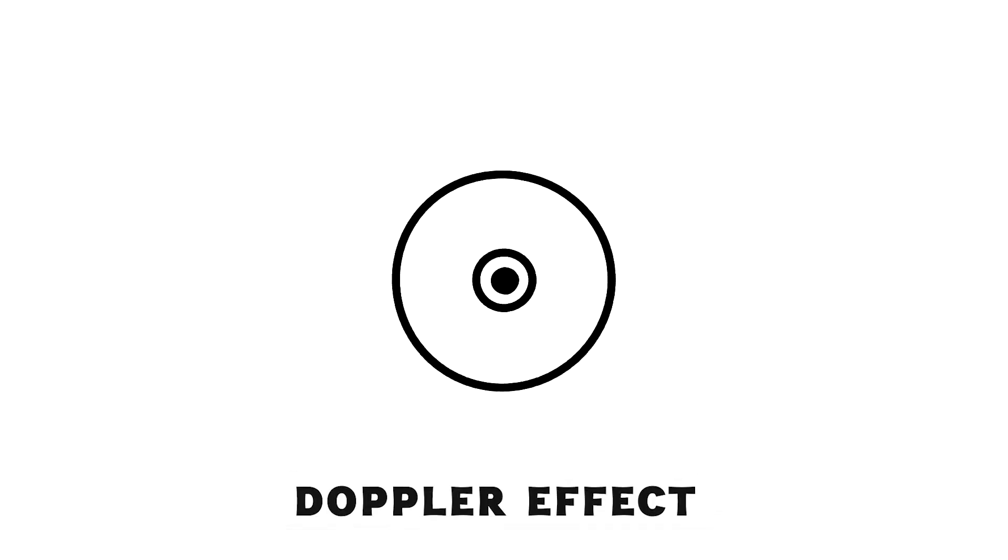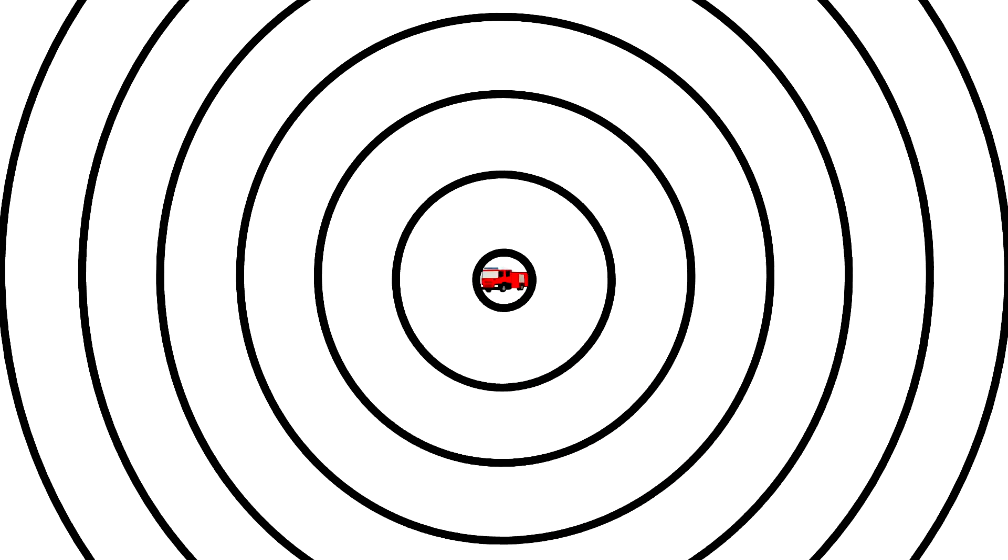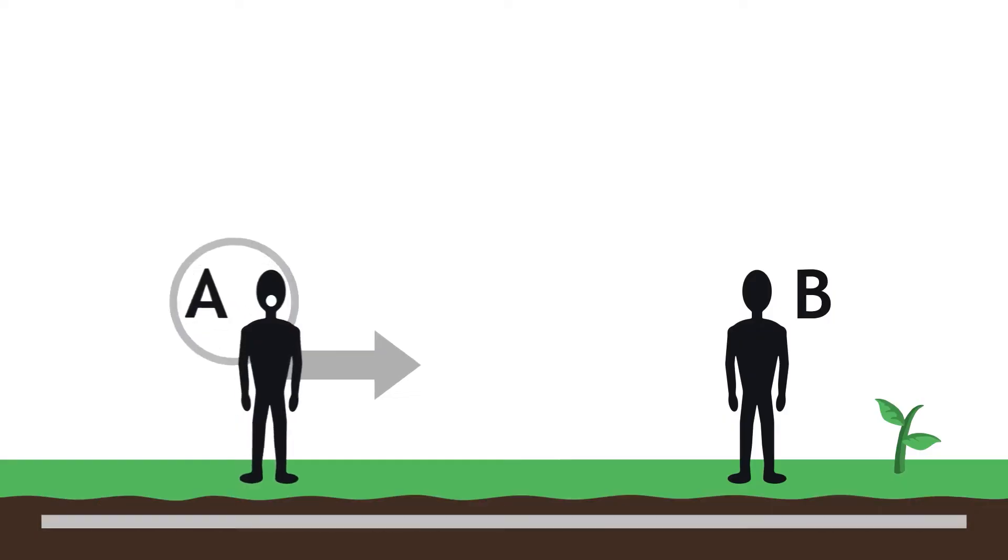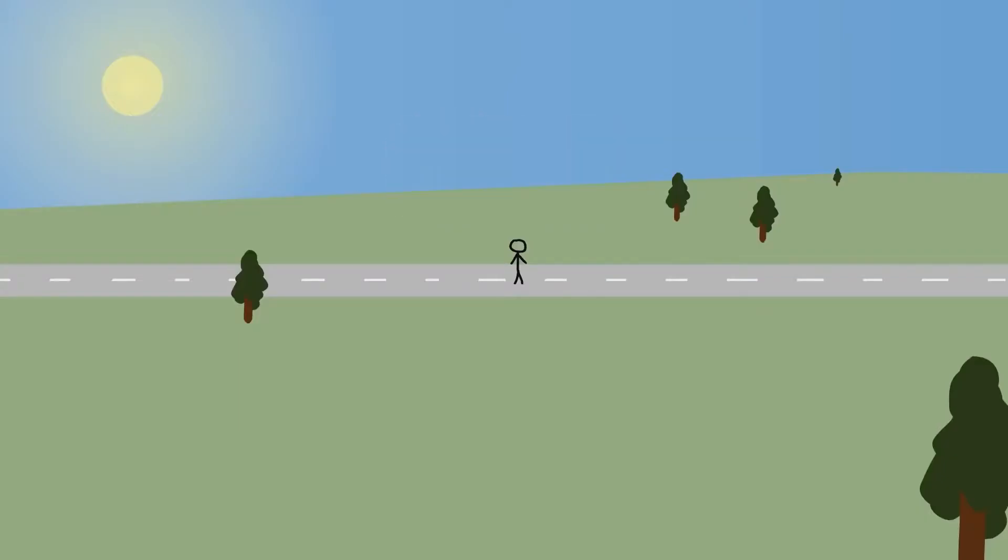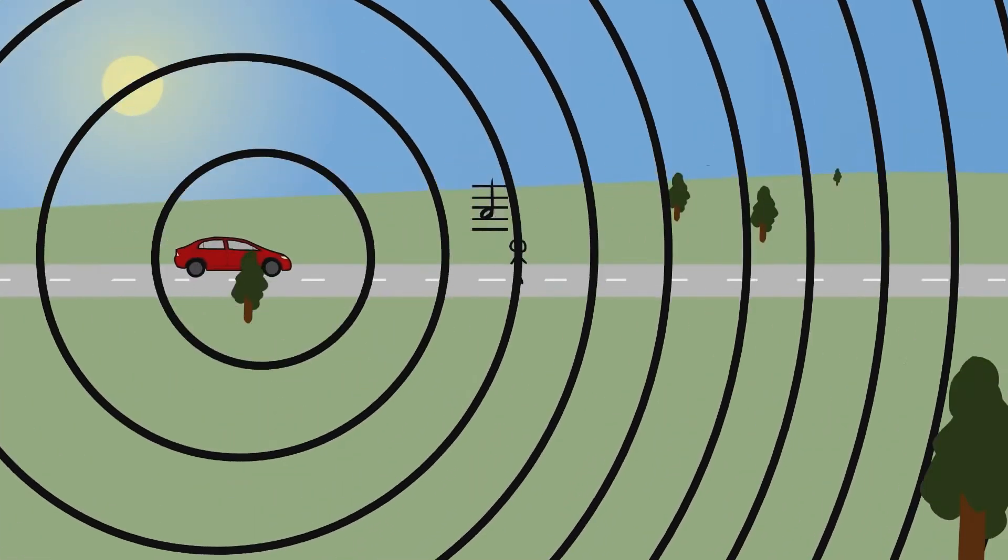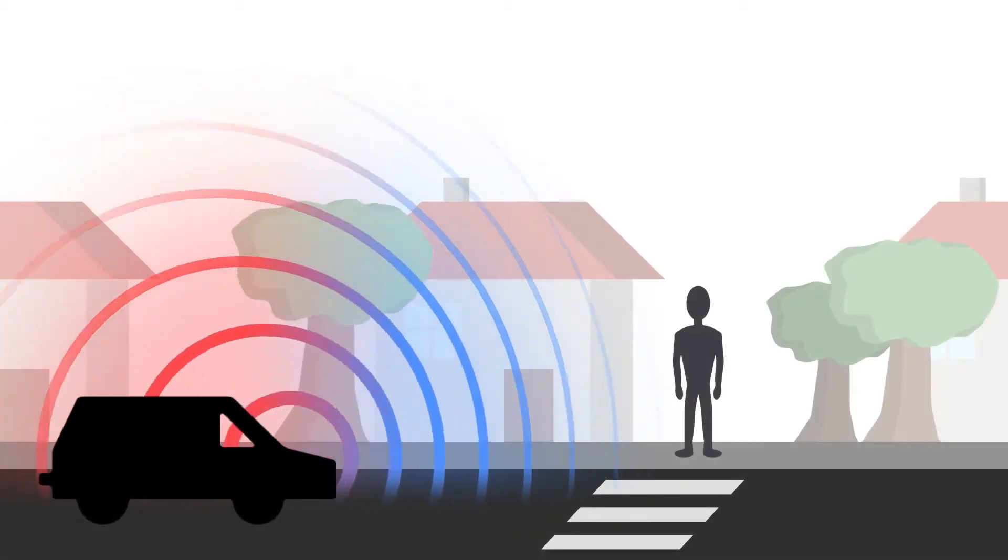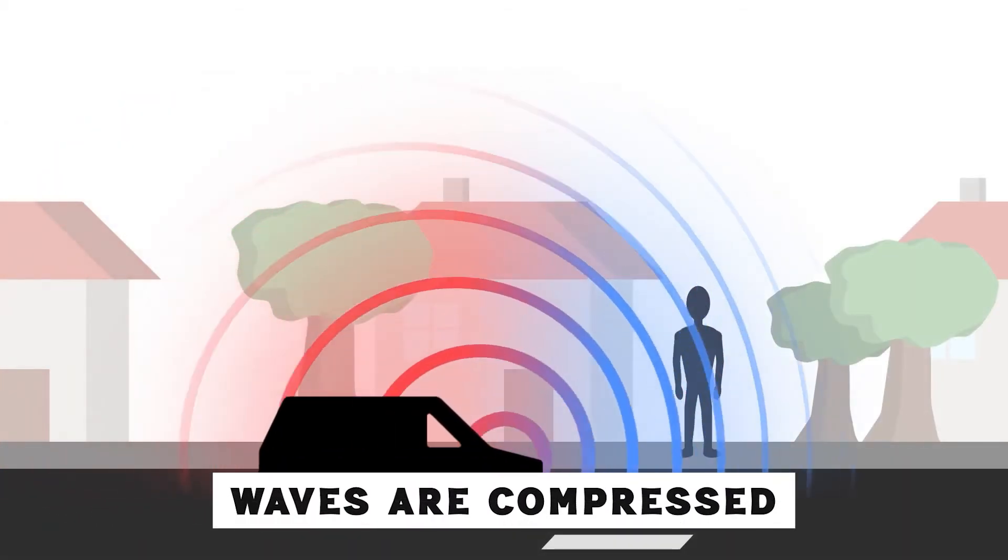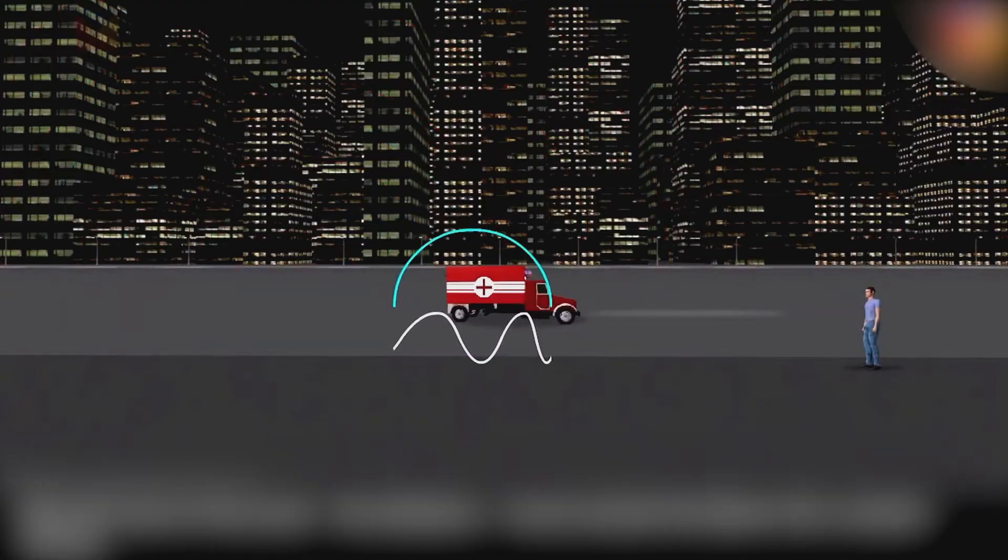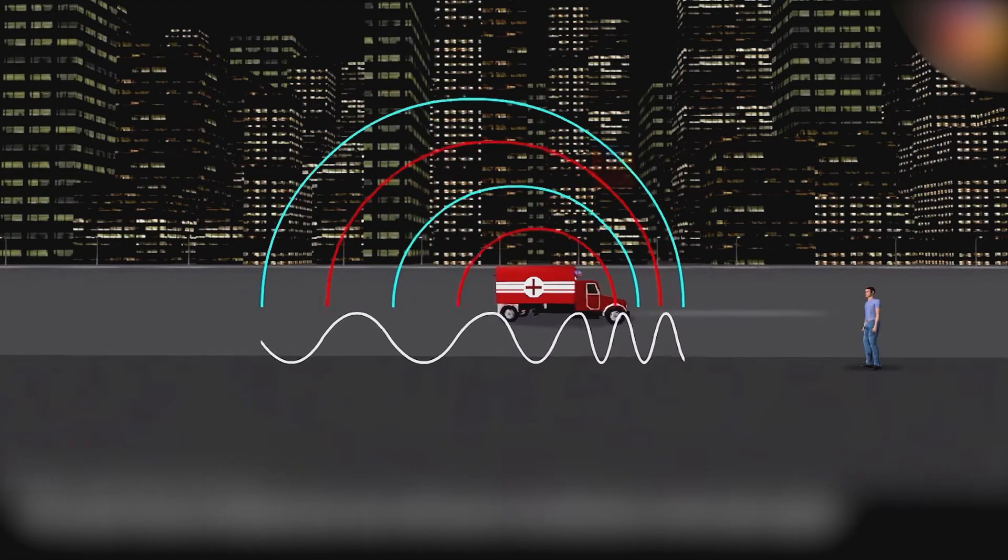The Doppler effect is what happens when the frequency of a sound or light wave changes because the source of the wave or the observer is moving. In the case of the siren, as the car gets closer, the sound waves are compressed - packed together more tightly - which makes the pitch of the siren sound higher.